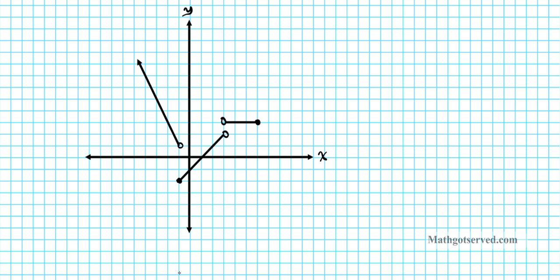Let's take a look at question number two. We have a graph and we're going to write the piecewise defined function for it. We can clearly see we have three functions here again: function one, function two, function three. The first break happens at x equals negative one and the next break happens at x equals positive three. The value on the far right is positive three, and this last segment ends at what appears to be x equals four — let's indicate those values on the x-axis.